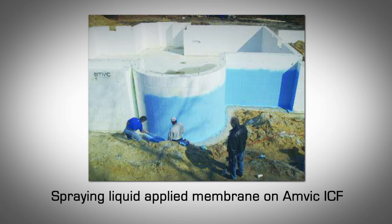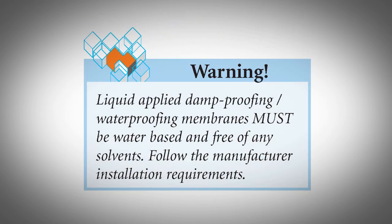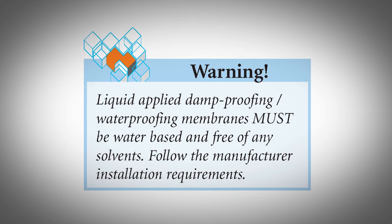Liquid applied damp proofing and waterproofing systems. Liquid applied membranes usually come in pails of 5 US gallons each. Depending on the product, the membrane can be applied using a trowel, brush, roller, or spray. To protect the liquid applied membrane from sharp, heavy gravel in the backfill soil, AMBIC recommends installing protective boards or drainage composites over the membrane, which provide additional moisture protection and air channels for water to be carried by gravity to the footing drain. Liquid applied membranes must be water-based and free of any solvents. Follow the manufacturer's installation requirements.